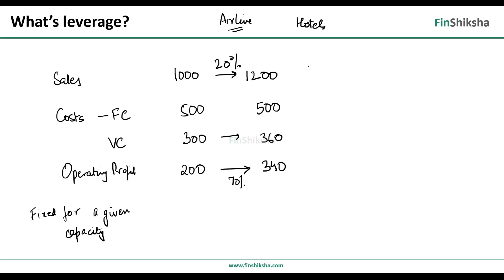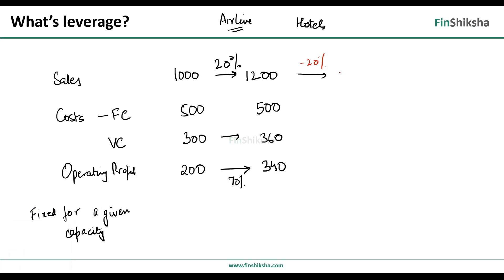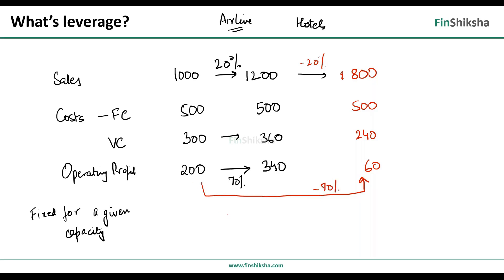Unfortunately, the opposite side is also true. If you have a minus 20 percent scenario in sales, sales goes down to 800. Fixed cost remains fixed. Variable cost goes down by 20 percent to 240. What you're left with is 60, which is a minus 70 percent number. So you see that the change in operating profit divided by change in sales gives a number of 3.5 times. You change sales by 2 percent, operating profit changes by 7 percent; change by 20 percent, it changes by 70 percent.